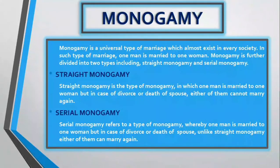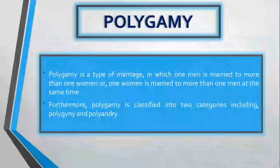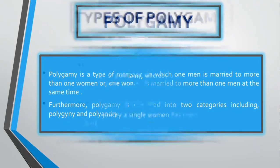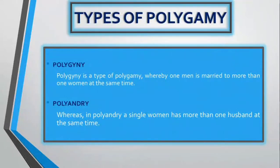Polygamy is a type of marriage in which one man is married to more than one woman, or one woman is married to more than one man at the same time. Polygamy is classified into two categories: polygyny and polyandry. Polygyny is a type whereby one man is married to more than one woman at the same time, whereas in polyandry a single woman has more than one husband at the same time.